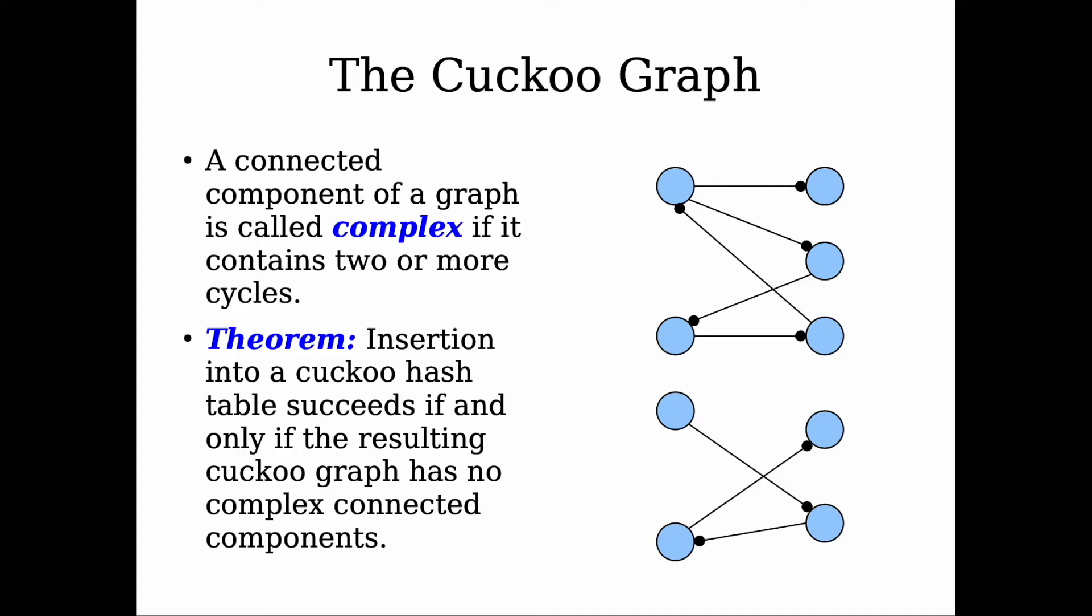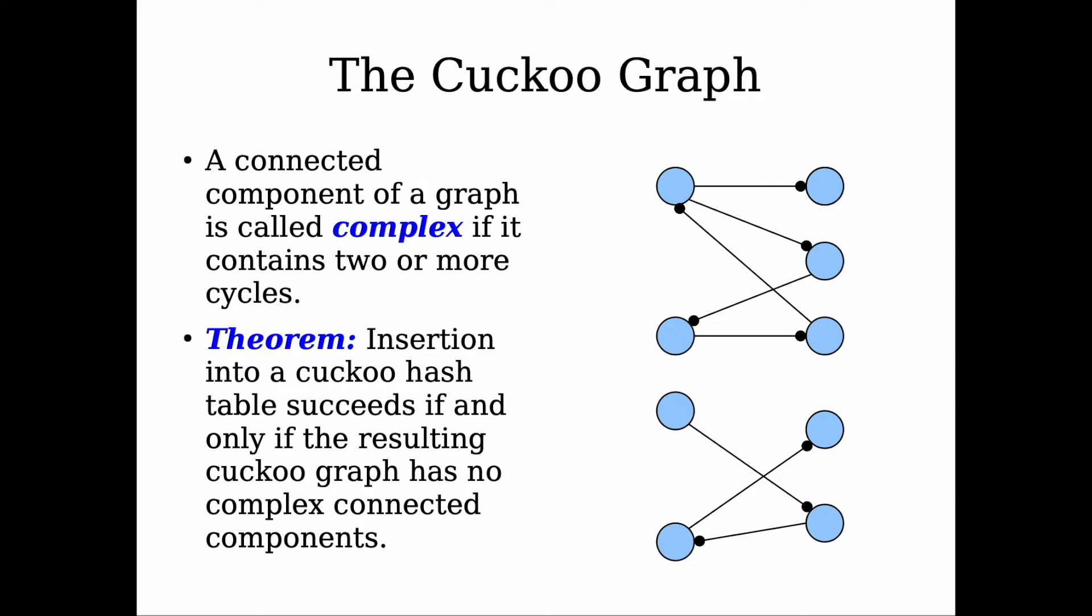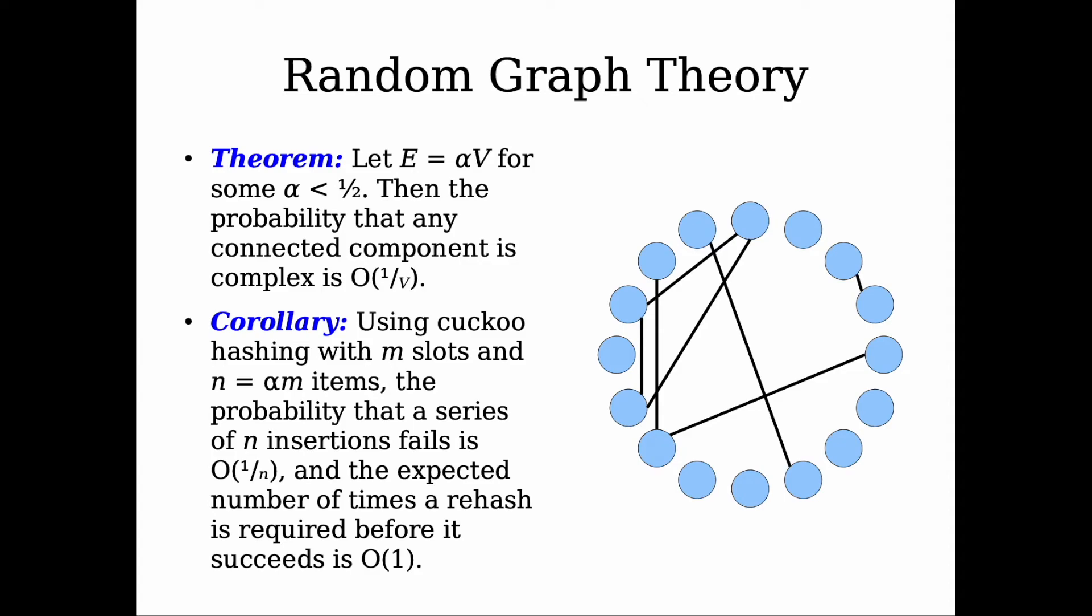The opposite of that is if we have a tree, it's not a complex connected component, or if it's a graph with only one cycle, it's not a complex connected component. However, if it contains two or more cycles, it's called a complex connected component. Using those claims and definitions from the previous slides, we're now ready to discuss the theorem that says that insertion into a cuckoo hash table succeeds—it will not fail—if and only if the resulting cuckoo graph has no complex connected component. Other than that, it will fail or yield to an infinite eviction. However, this theorem is still incomplete. We need to relate the load factor and the running time of the insert operation.